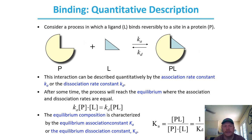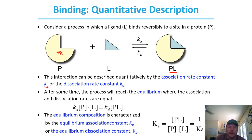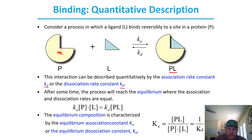Binding can be quantitated. We have a protein P and a small ligand L. There is an association constant for the formation of the PL complex and a dissociation of that PL complex. This interaction can be described quantitatively by the association rate constant K sub A or the dissociation rate constant K sub D. We can characterize this as: K sub A times the concentration of P times the concentration of L equals K sub D times the concentration of PL.